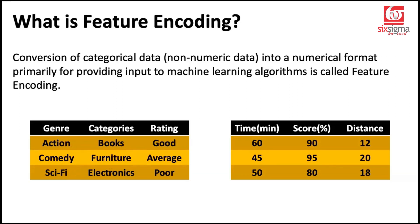One more point to be clear about: there could be columns where there is no order. For example, your preference might be that you like action movies and someone else likes comedy movies — you can't say action is greater than comedy. Similarly, categories on a website can't have an order. But when it comes to ratings, there is a sense of order — good versus average versus poor. So categorical variables could be nominal when there is no sense of order, or ordinal where there is an order.